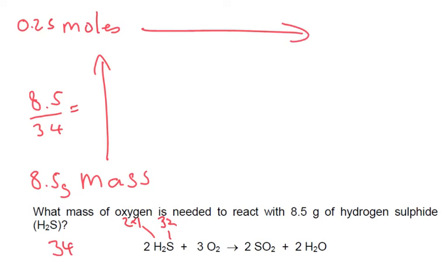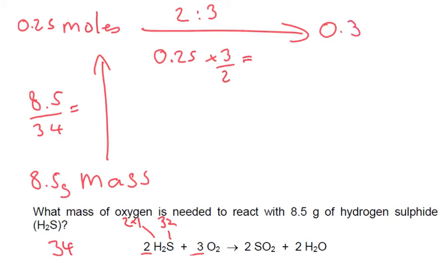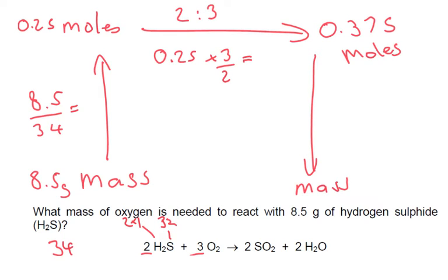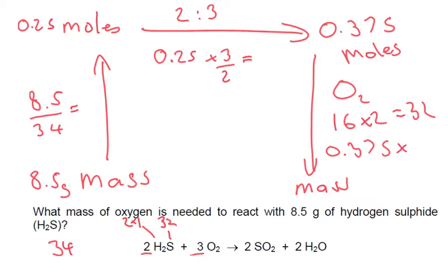Let's have a look at the ratio — well it's 2 to 3. So 0.25, we're going to divide by 2 and times by 3, and we get 0.375 moles. And finally we want to go to mass. So oxygen O₂ is 16 times by 2, and we've got 0.375, so that's 32. So 0.375 times by 32 is going to be our mass. And we get an answer of 12.